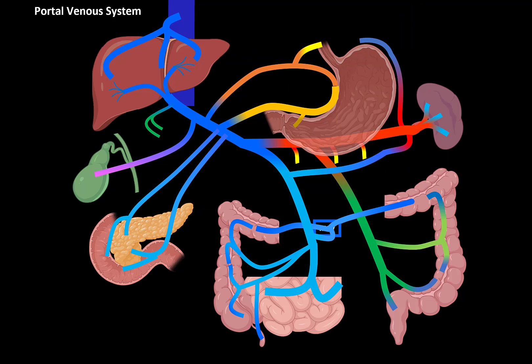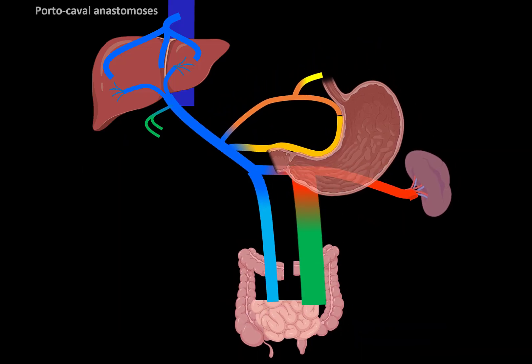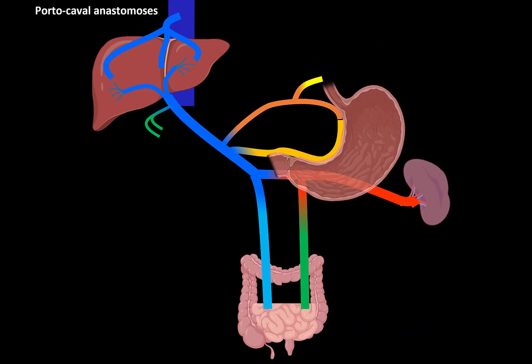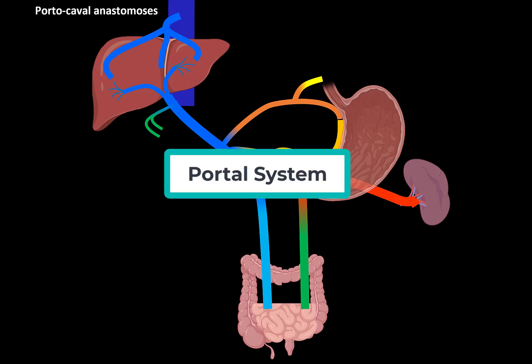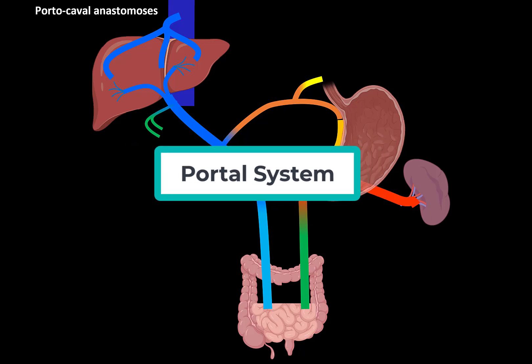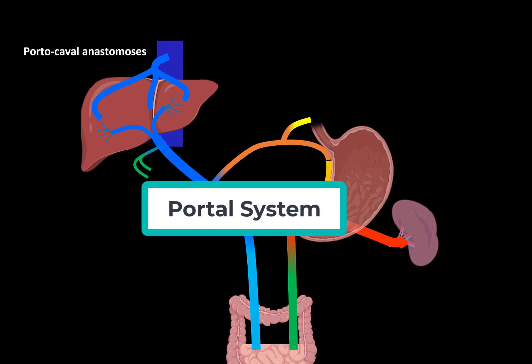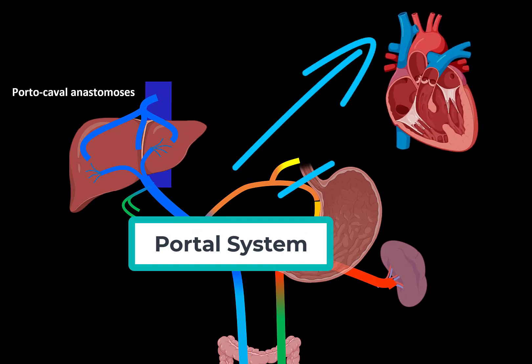There's a concept that's very clinically important: the portocaval anastomosis. This is an anastomosis, or connection, between the tributaries of the portal vein and the superior or inferior vena cava — hence the name portocaval anastomosis.